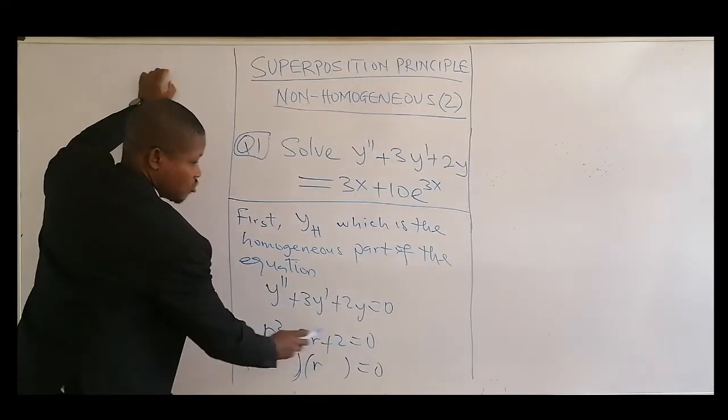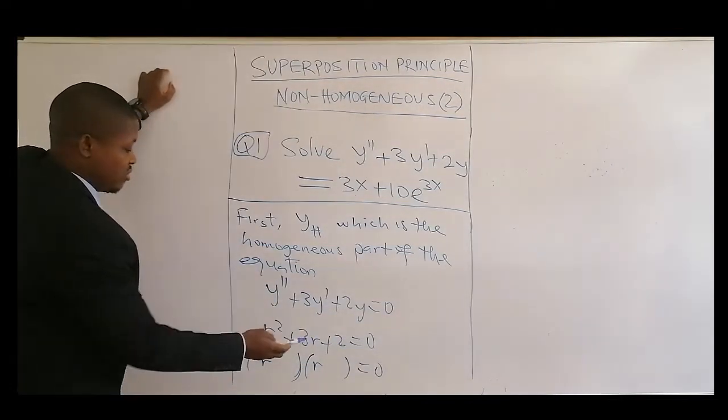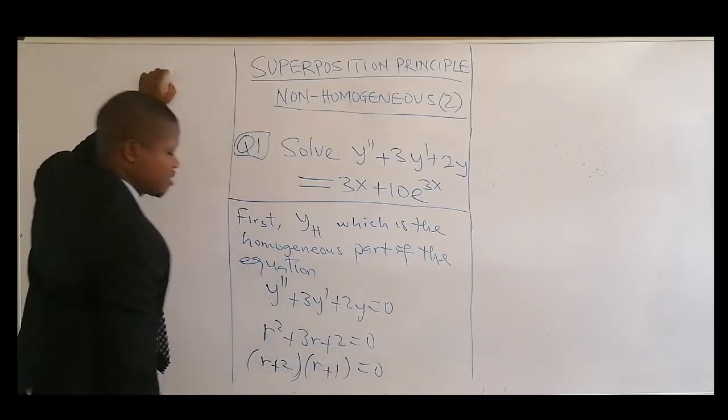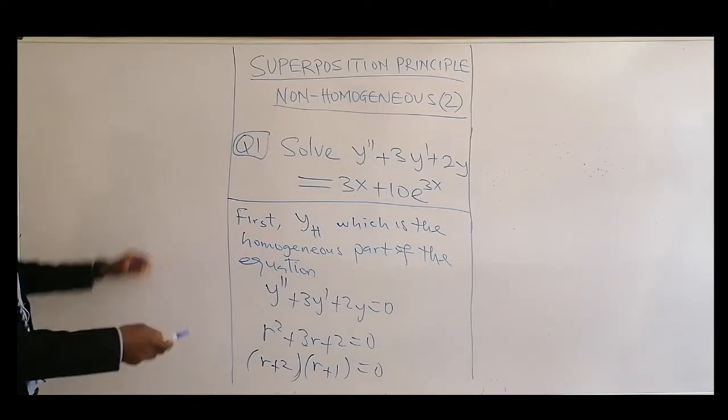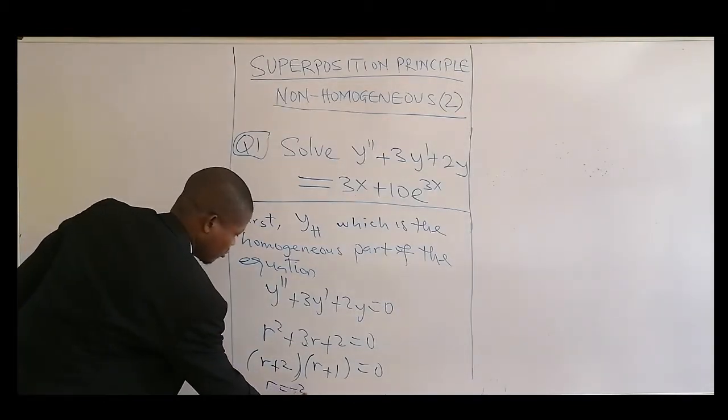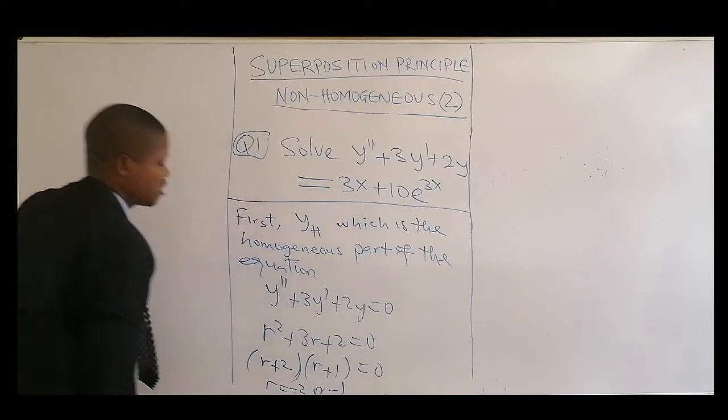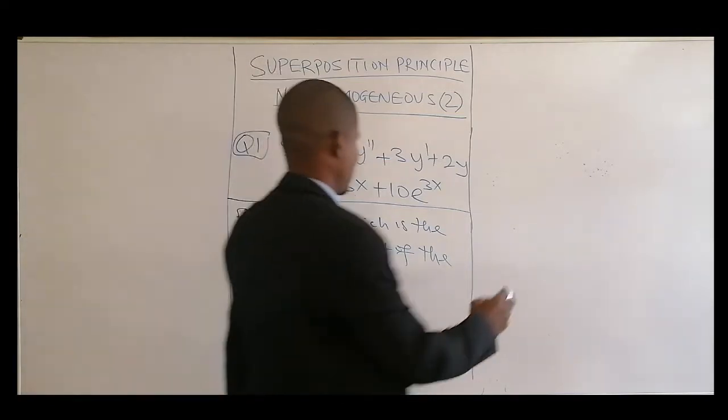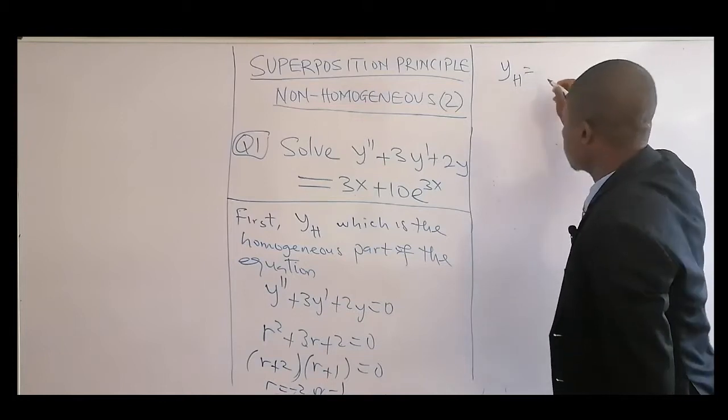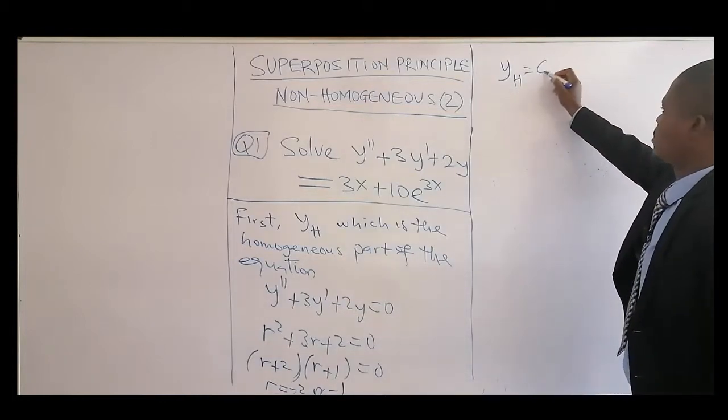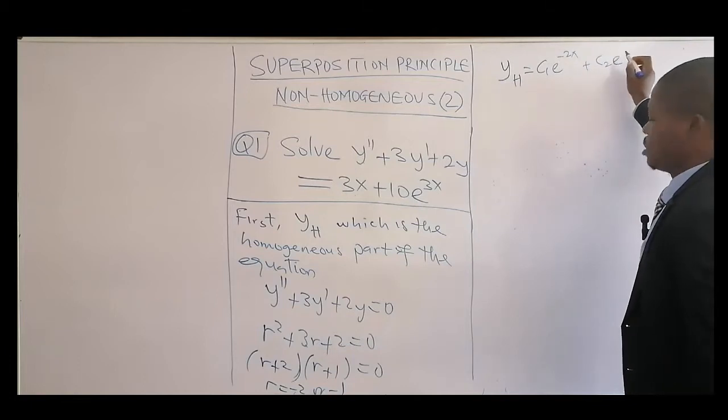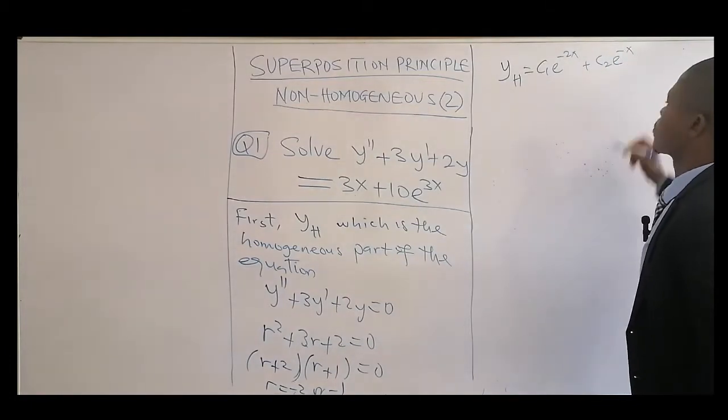Then we can factorize this. Factor of 2 is 2 and 1. So how do you use 2 and 1 to get that plus 3? That plus 2 and then plus 1. And when you multiply plus 2 plus 1, you get back your plus 2. So your r now is minus 2 or minus 1.